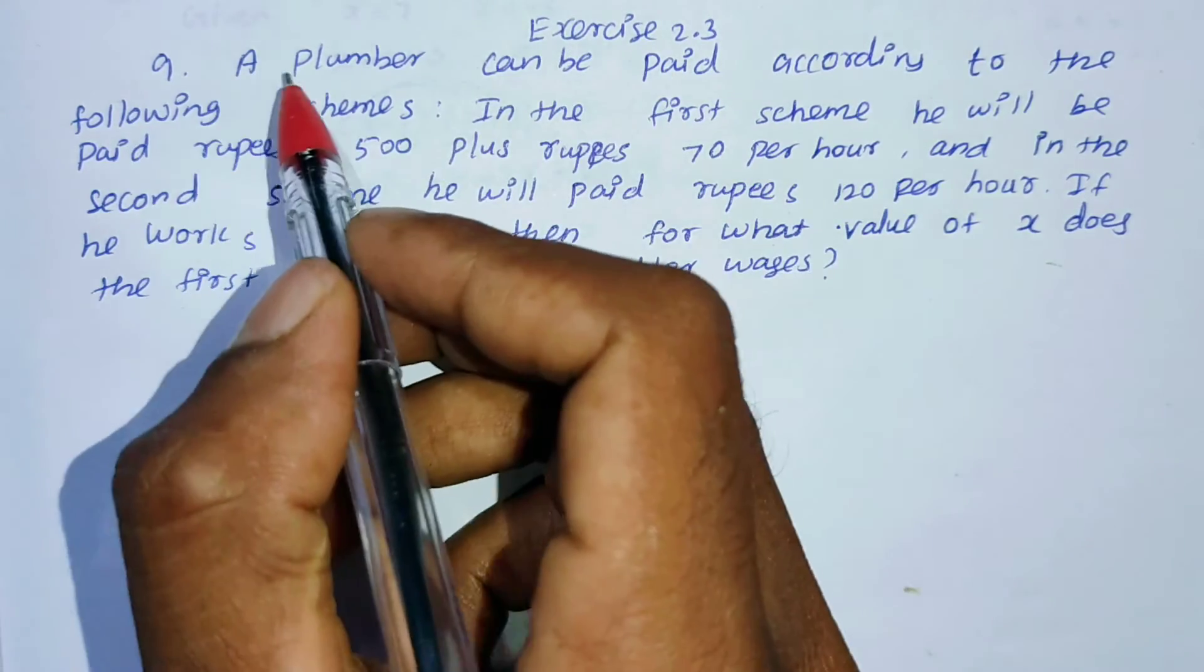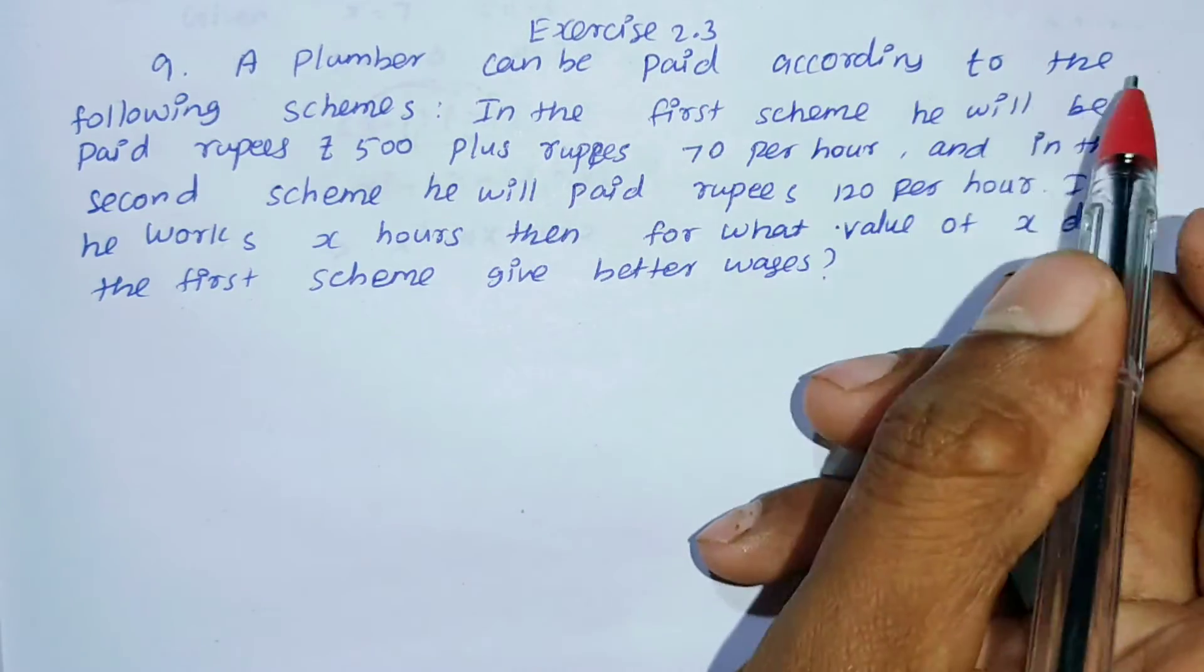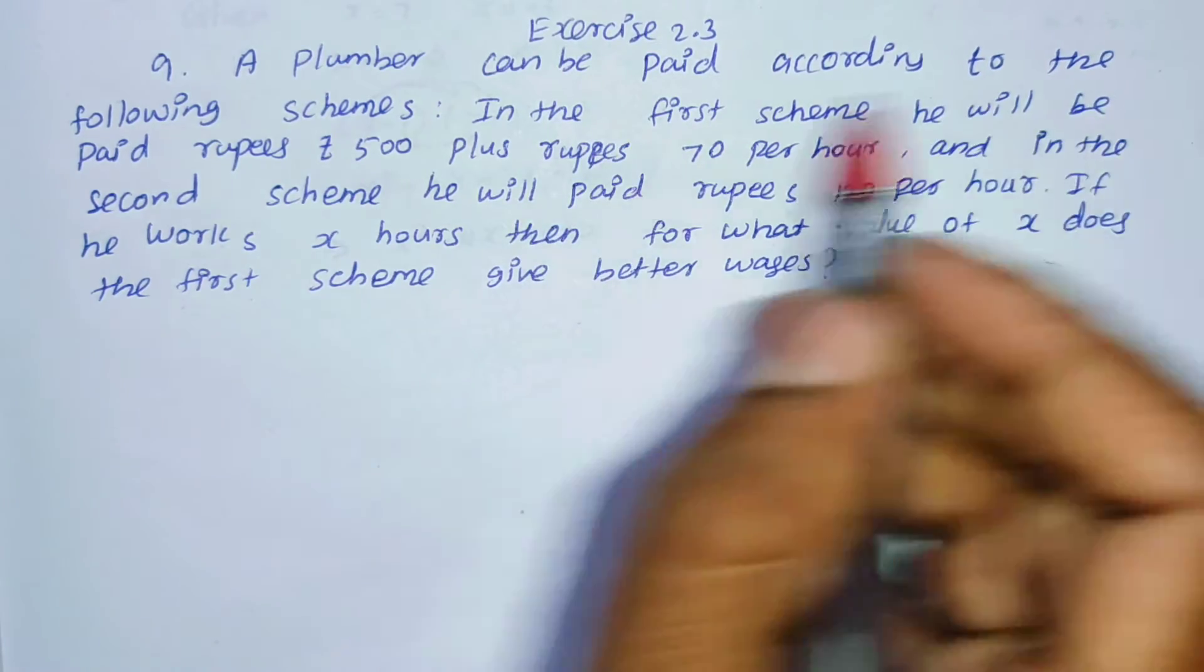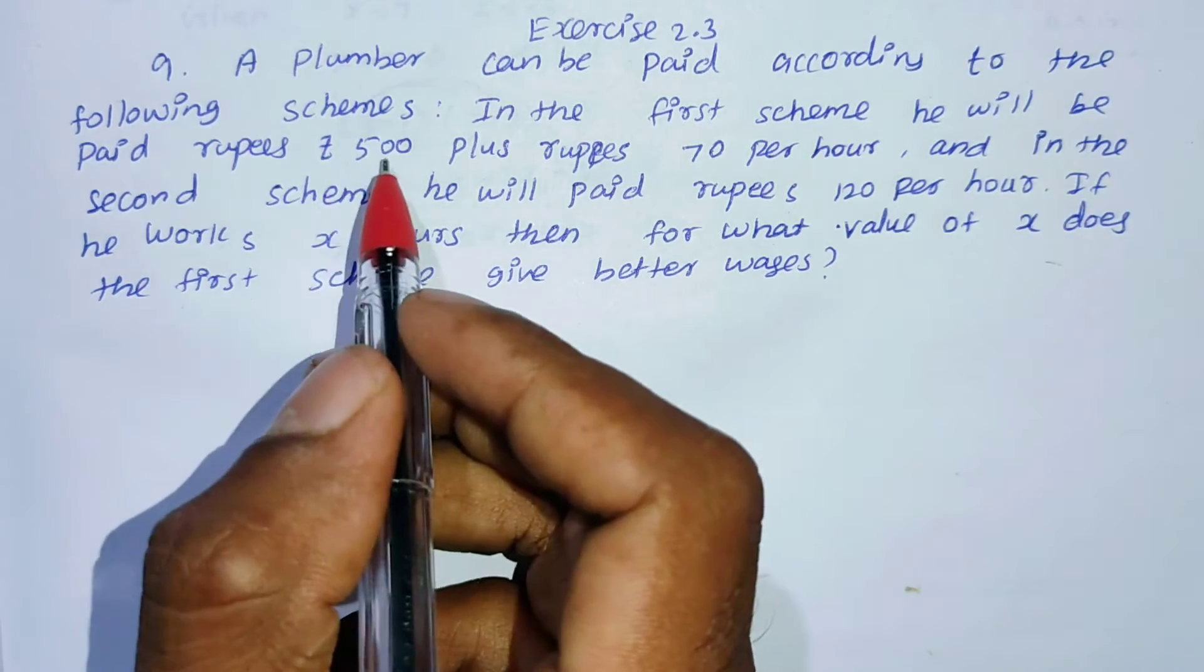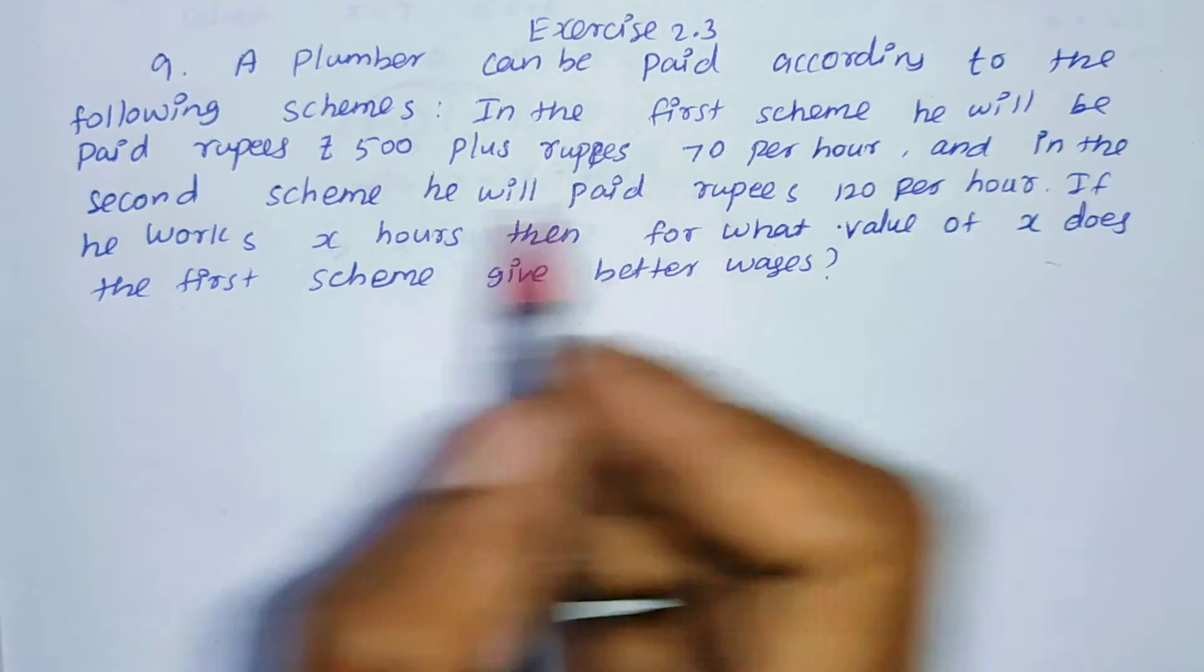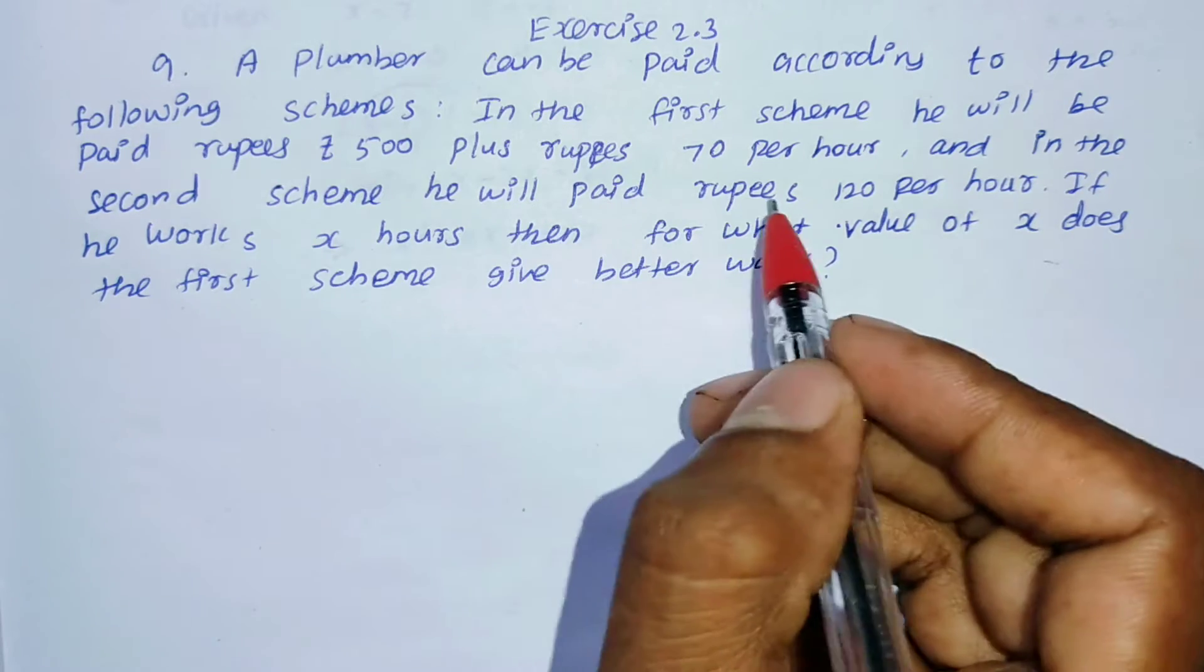Exercise 2.3, question number 9. A plumber can be paid according to the following schemes. In the first scheme, he will be paid rupees 500 plus rupees 70 per hour.